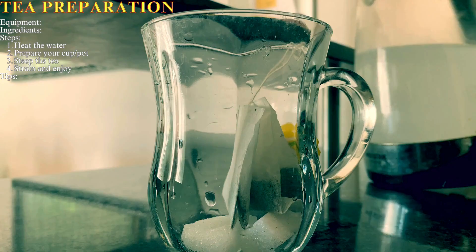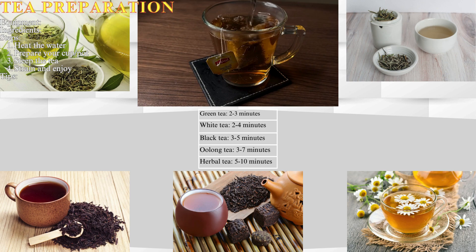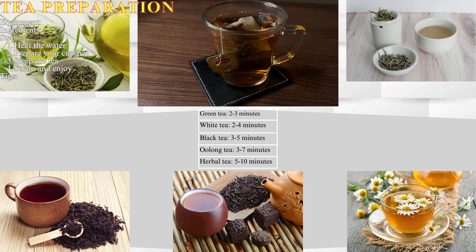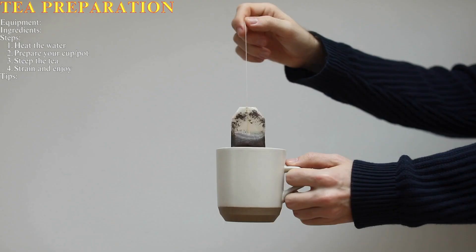Step three: steep the tea. Pour the hot water over the tea leaves or bag, cover the cup or pot (optional), and let it steep for the recommended time. General steeping guide: green tea 2–3 minutes, white tea 2–4 minutes, black tea 3–5 minutes, oolong tea 3–7 minutes, and herbal tea generally 5–10 minutes.